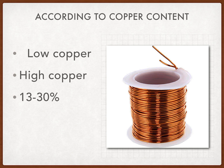The second classification is according to the copper content. We have low copper and high copper content amalgams. The low copper amalgams are considered inferior to the high copper amalgams. The high copper amalgams are the more current dental amalgams, containing 13 to 30 percent copper. As mentioned in previous videos, copper is very important because it strengthens the amalgam by preventing the gamma two phase — the tin-mercury phase — from occurring.